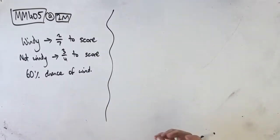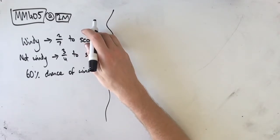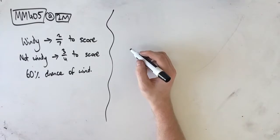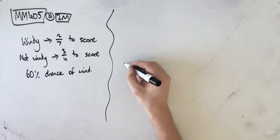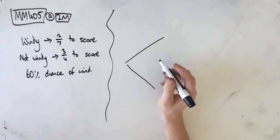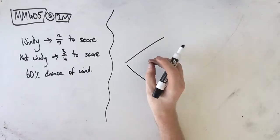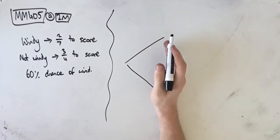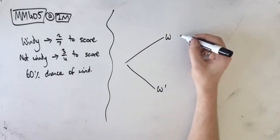First things first, recognize that this is conditional probability, because one event happening depends on the other one — his ability to score depends on whether it's windy or not. As soon as we recognize that it's conditional probability, what we want to do is create a tree diagram, because it's going to allow us to visualize things very easily. Whatever event affects the other one comes first in your tree diagram. So because the wind affects our goals, the wind is going to come first.